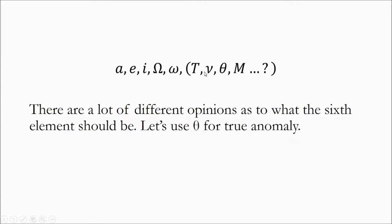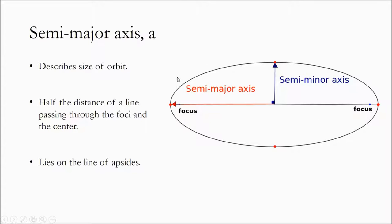Let's dig into these in a little more detail, starting with the semi-major axis. It describes the size of the orbit. The semi-major axis is half the distance of a line passing through the foci and the center — the major axis is the full line, and the semi-major axis goes from the center to one end. It lies on the line of apsides, which is the line connecting your apoaps and periaps, assuming one focus is our central body.